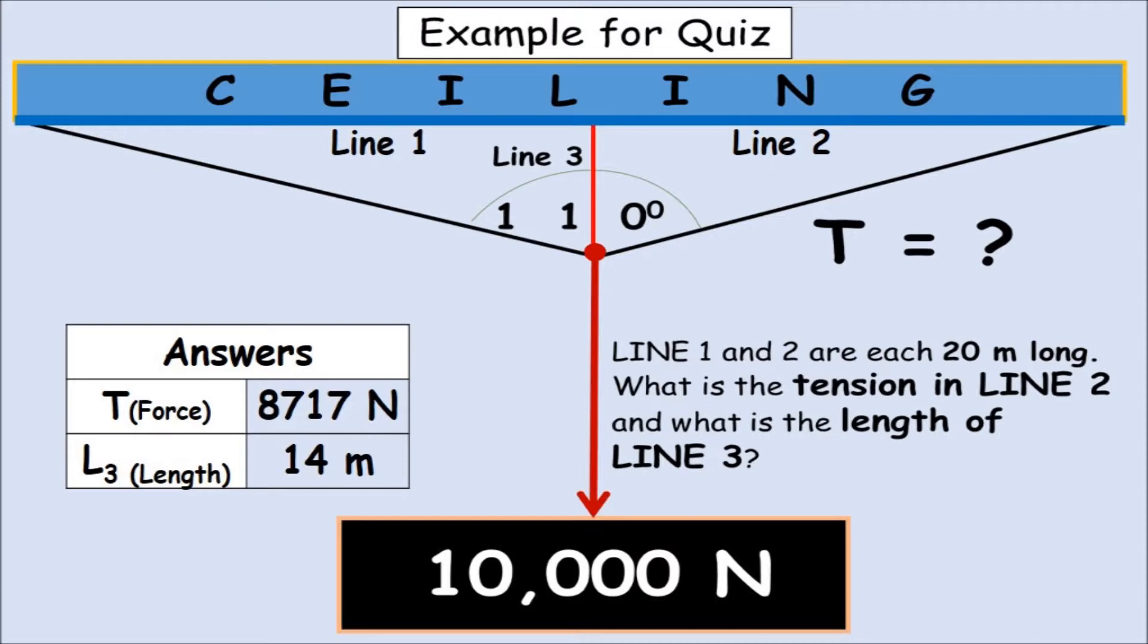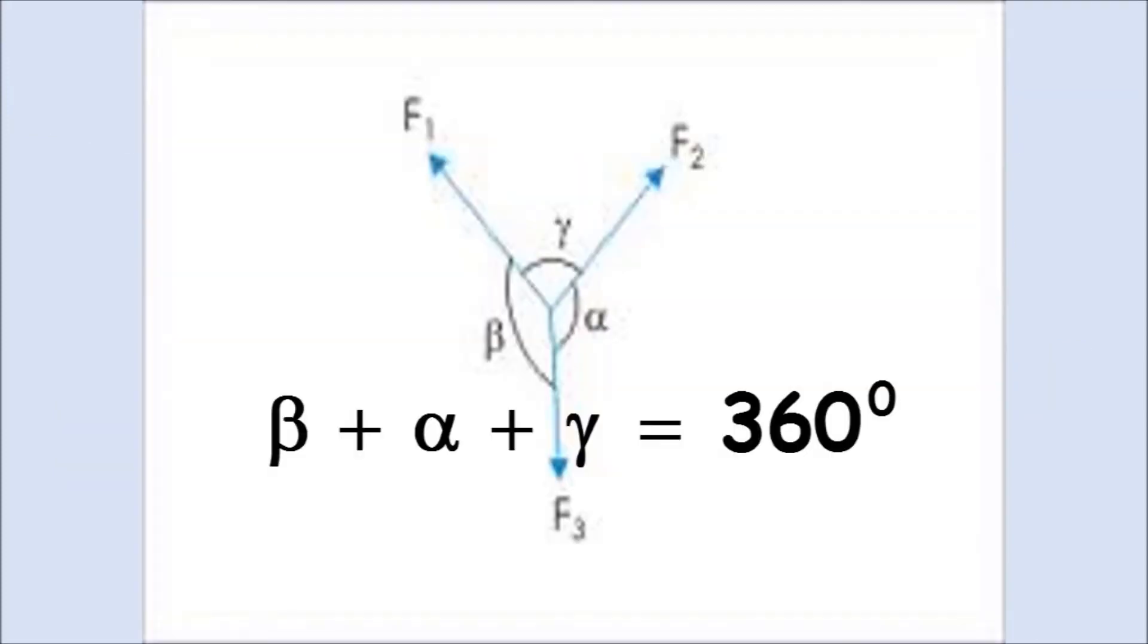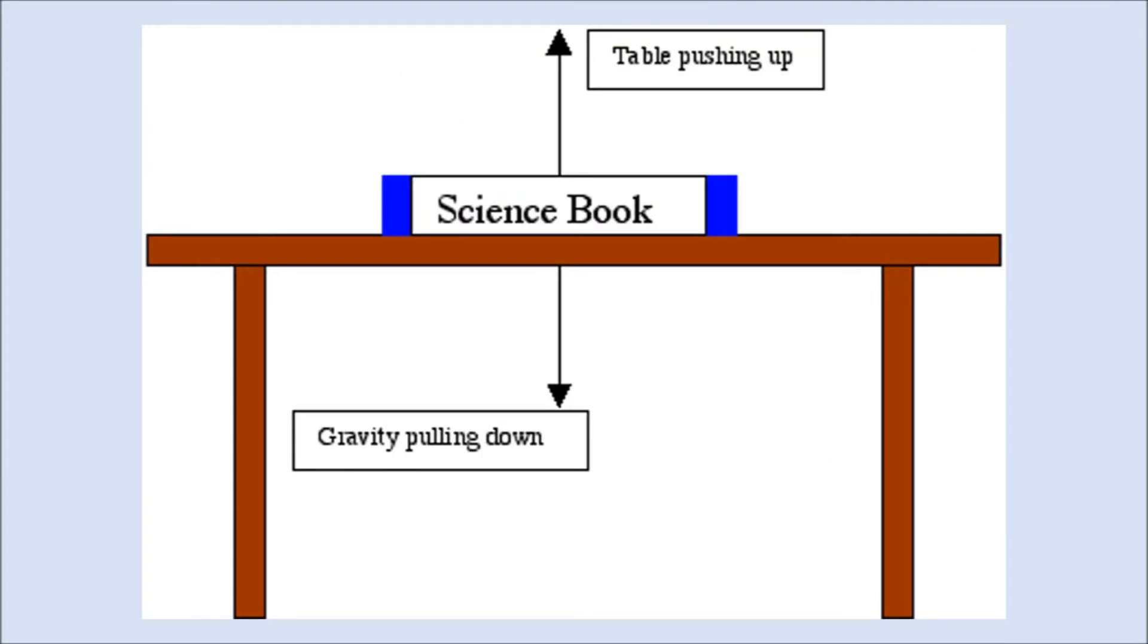So, this is a summary of the problem. 8,717 newtons, and 14 meters is the length of the sag. The circle is made of 360 degrees. Complementary would add to 90. Supplementary would add to 180. Don't forget, beta, alpha, gamma equal 360 degrees. Here's an example of static equilibrium.